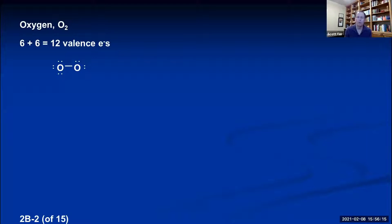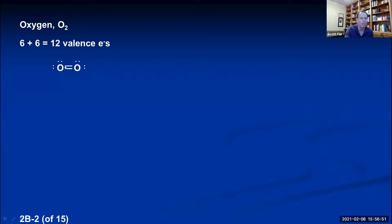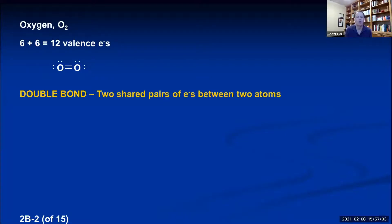Whenever you use up all electrons and at least one atom doesn't have an octet, the mistake is that the two atoms are not sharing one pair of electrons — they must be sharing more. You take a lone pair from the atom that has an octet, move it into a sharing position. Now you can count four electrons for each oxygen: 4, 6, 8 — octet; 4, 6, 8 — octet. Two oxygen atoms bond together by sharing two pairs of electrons. This is called a double bond.